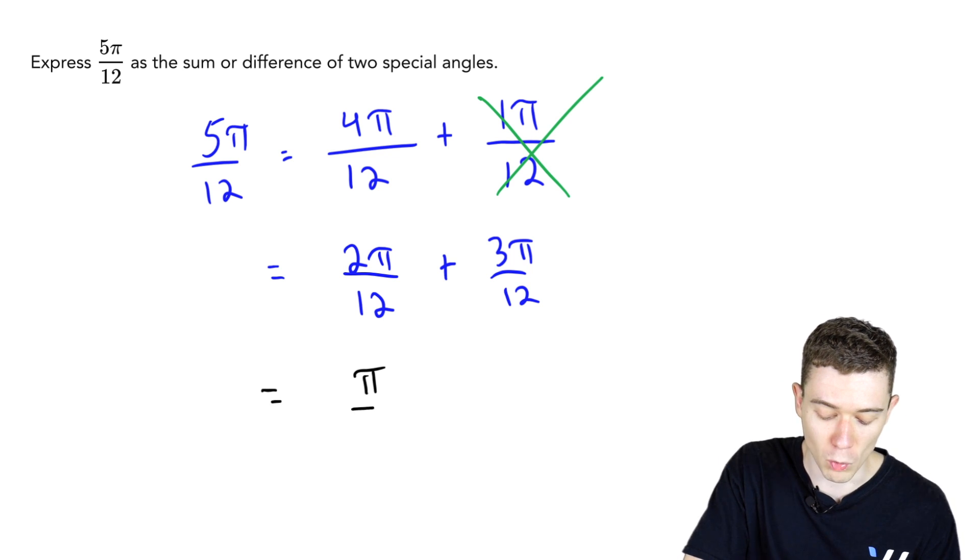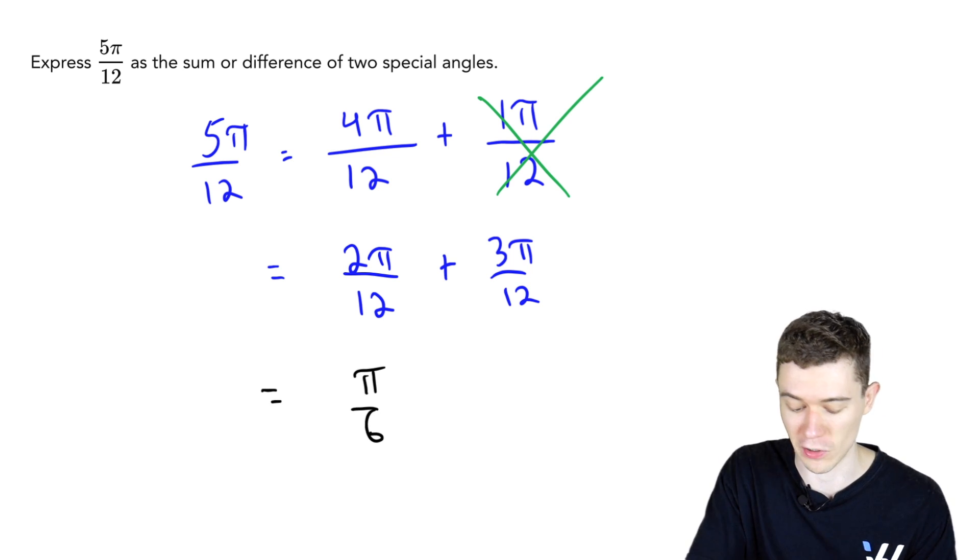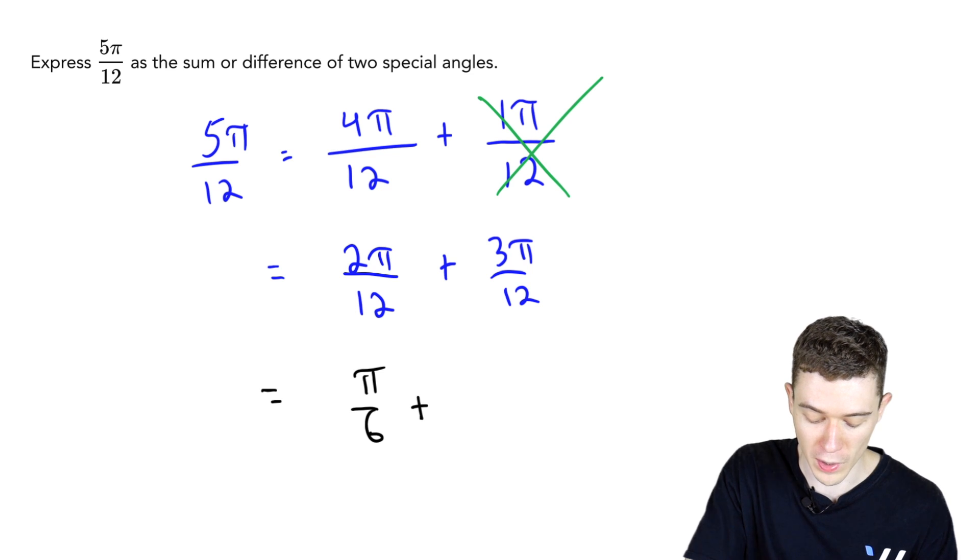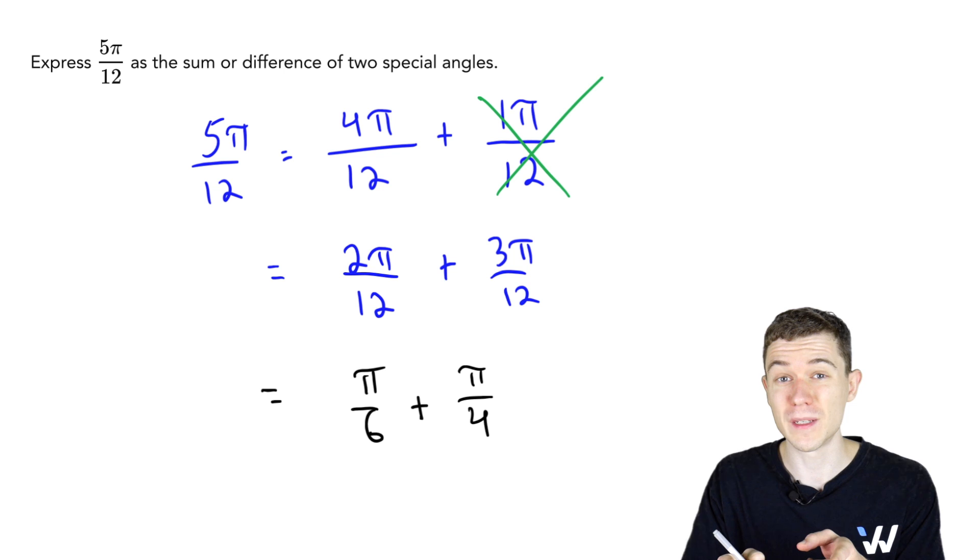2π/12, that would be π/6. That's a special angle. 3π/12, that would reduce to π/4. That's another special angle.